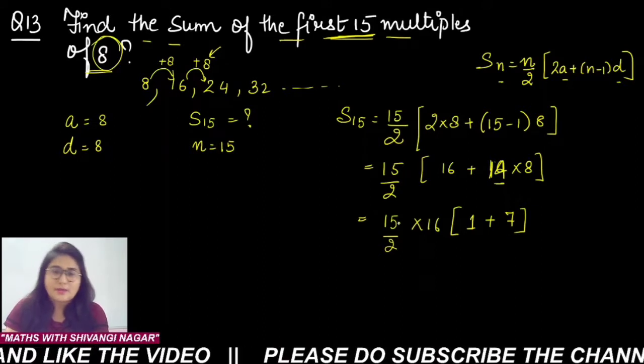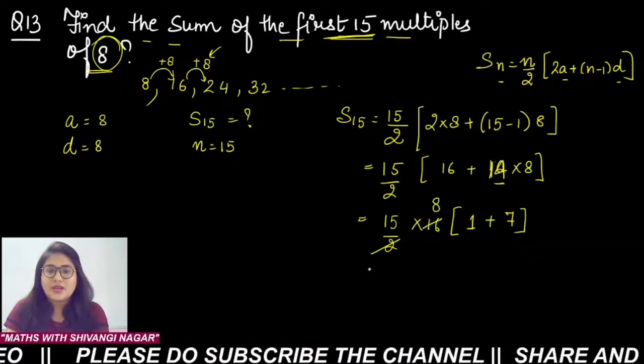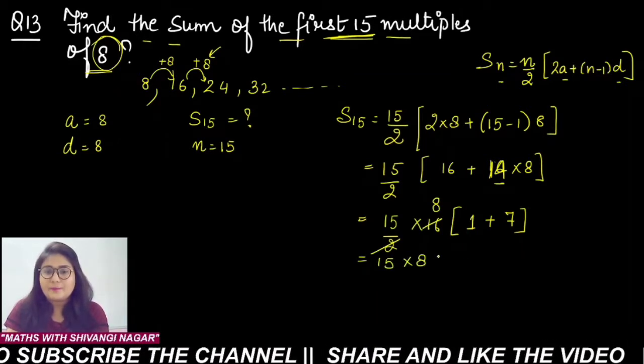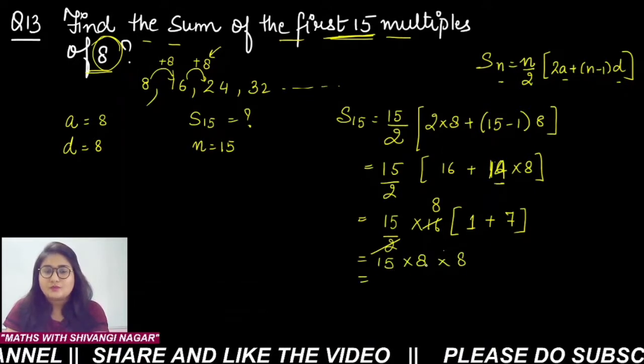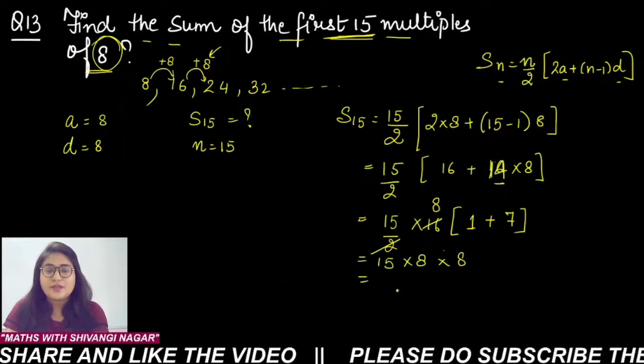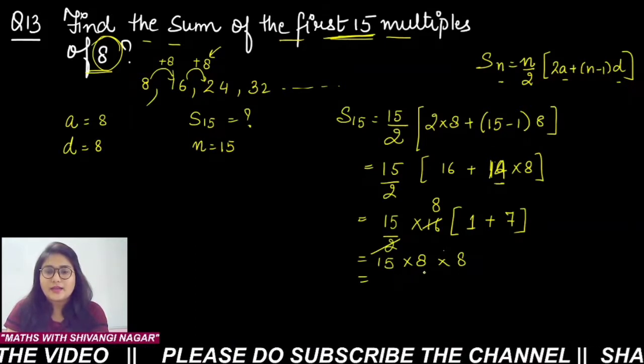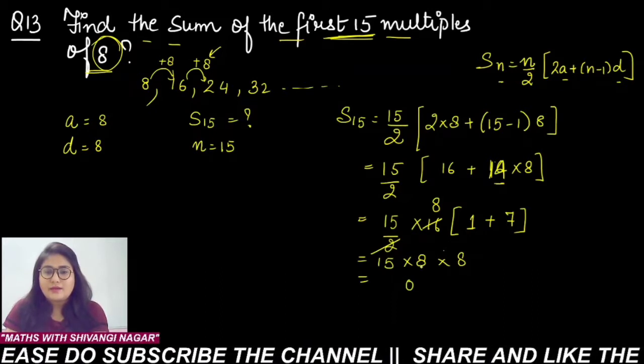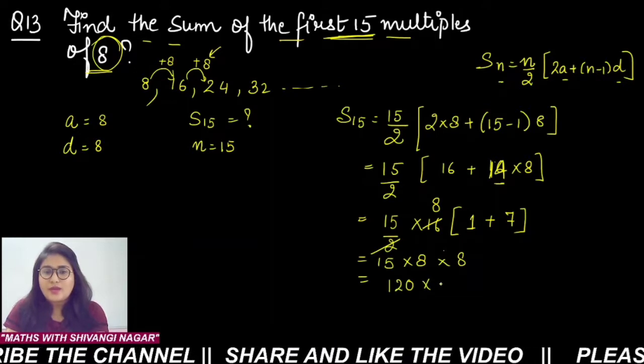Now this 2 cancels 16 how many times? 8 times. So 15 multiply by 8 into 1 plus 7 is 8. Now what is 15 times 8? 5 times 8 is 40 and 8 times 5 is 40, carry over 4, and 8 times 1 is 8 plus 4 equals 120. 120 into 8.